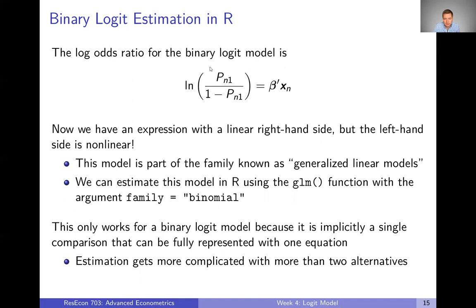We can estimate this generalized linear model in R using the GLM function — GLM for generalized linear model — and just tell it the argument family equals binomial. We'll look at an actual example later on. Once we've gotten to this generalized linear model where the right-hand side is linear, we can estimate it in R really similarly to how we estimate an OLS model. The actual estimation R is doing is very different, but the way we interact with R is really similar. Importantly, this only works for a binary logit model, because it's implicitly just one comparison representable by one equation. When we get to more than two alternatives, estimation gets more complicated and we'll have to use something other than GLM.